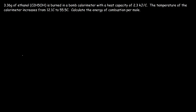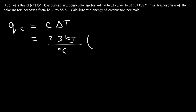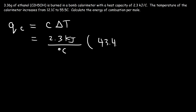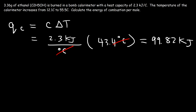Now let's calculate the heat energy absorbed by the calorimeter: q = C × ΔT. The heat capacity is 2.3 kJ/°C and the temperature change is 55.5 minus 12.1, which equals 43.4 degrees Celsius. Multiplying 2.3 by 43.4 gives 99.82 kilojoules.